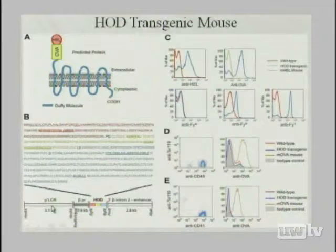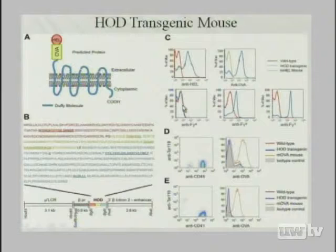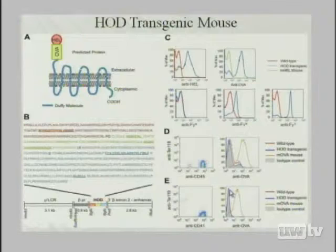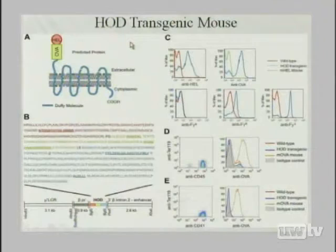We chose these molecules because there is a panoply of tools to study them in murine systems. The transgene is expressed under the LCR of the beta-globin gene, a red-cell-specific regulatory element. After going through several founders, we have an animal that expresses on sustaining red cells the HEL epitope, the OVA epitope — it doesn't express Duffy-a because it's made with the Duffy-b allele — and Duffy-3, the third extracellular loop, is quite detectable. If you stain CD45-positive leukocytes or CD41-positive platelets, you do not detect the antigen.